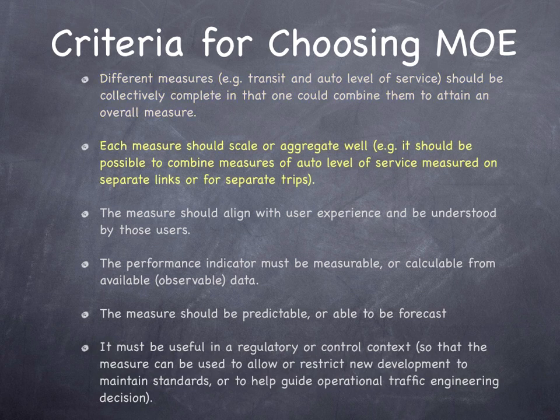You can't add level of service F at one intersection to a level of service at another intersection. You can compare them, but you can't sum them up. We want measures that we can combine to obtain an overall level of service — so that the level of service at an intersection plus the level of service on a link gives us a level of service on the combined system.